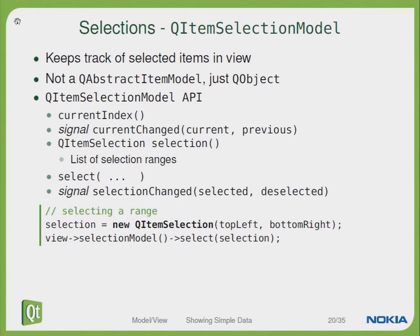So let's take a deeper look into selections. We have the QItemSelectionModel, which keeps track of selected items in the view. Keep in mind that QItemSelectionModel is not a QAbstractItemModel — it's just a QObject. The QItemSelectionModel API has functions to get the current index and also provides a signal when the current item changes, along with a lot of further information about the selection state.